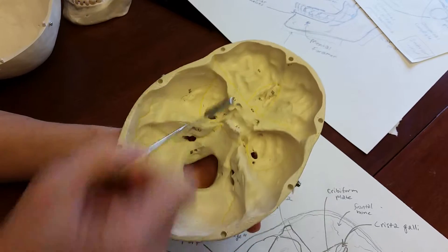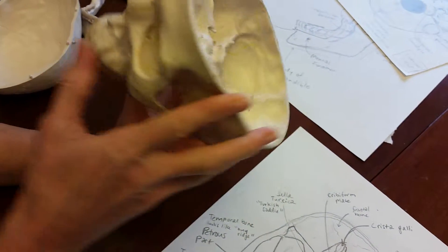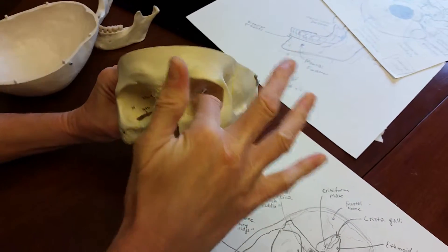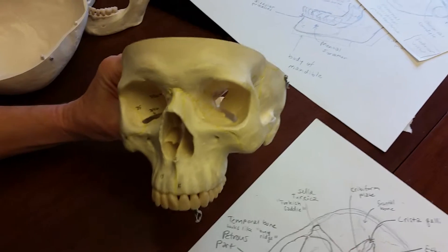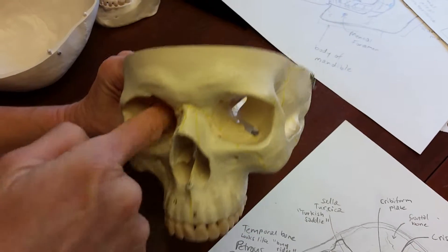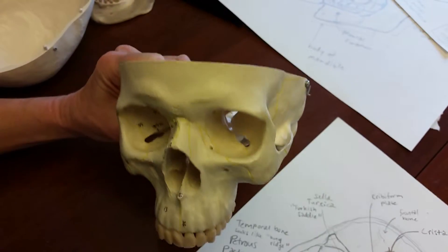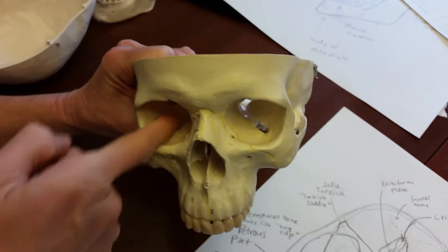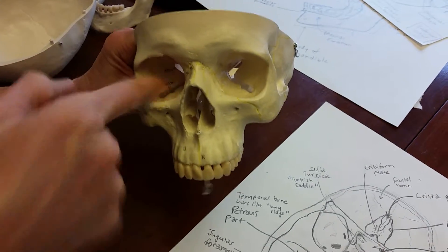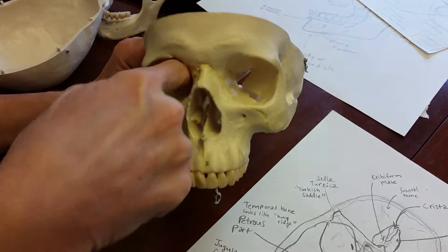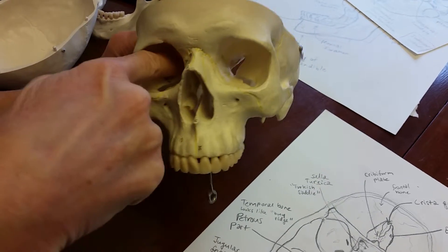Now I'm going to turn the skull around from the front, and you can look into the orbits of the eyes. You see this X shape here. The two together make an X shape. The lower arms of this X are the inferior orbital fissure, and the upper arms are the superior orbital fissure.